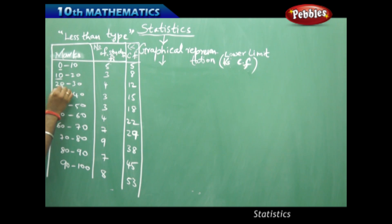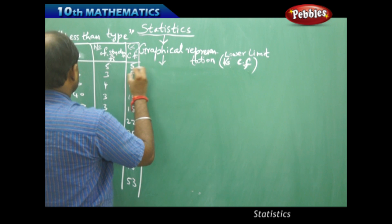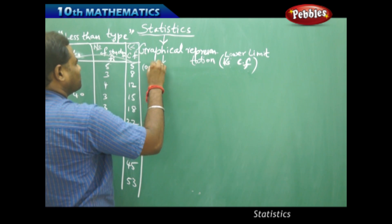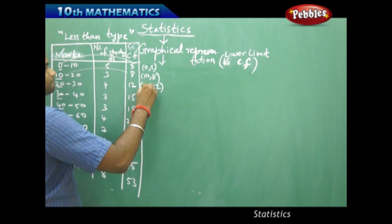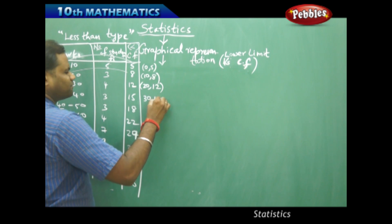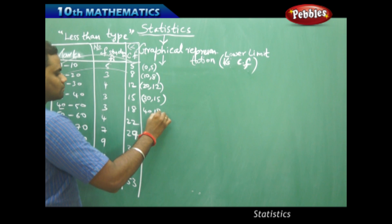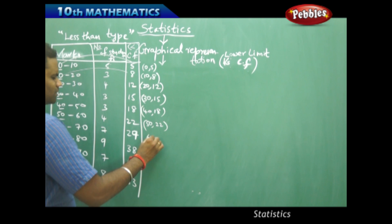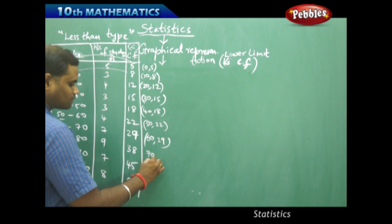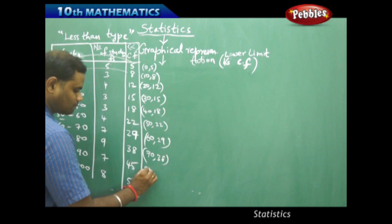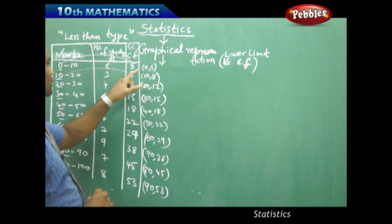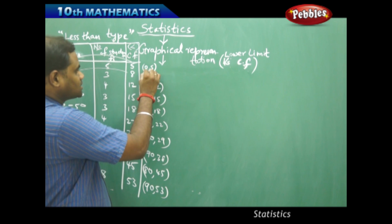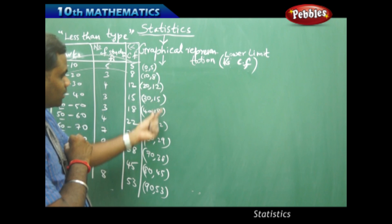Each of the lower limits are 0, 10, 20, 30, 40, 50, 60, 70, 80 and 90. Therefore I plot each of the points: (0, 5), (10, 8), (20, 12), (30, 15), (40, 18), (50, 22), (60, 29), (70, 38), (80, 45), and (90, 53). Each x-coordinate is the lower limit of the class interval and each y-coordinate is the respective cumulative frequency.